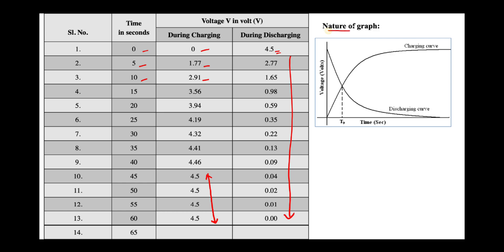Initially the voltage starts from 4.5 volts and decreases until we reach 0 volts. During charging, the graph starts from 0 and rises to a maximum of 4.5 volts. Once that maximum is reached, by using the toggle button and reset button, the circuit is converted into discharging mode and the graph decreases back down to 0 volts. This is how we perform the experiment.